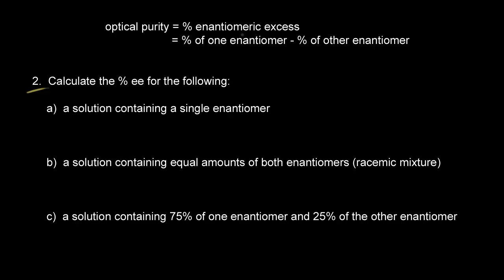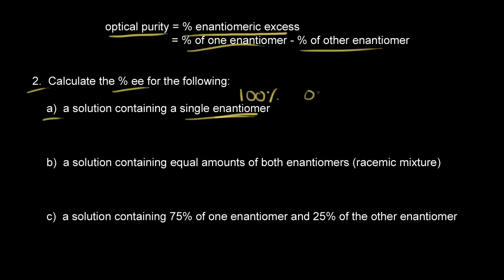For problem two, let's talk about percent enantiomeric excess, or optical purity. This is where you take the percentage of one enantiomer and subtract the percentage of the other. For part A, let's calculate the percent enantiomeric excess for a solution containing a single enantiomer. That means you have 100% of one enantiomer and 0% of the other, so the percent enantiomeric excess is 100 minus 0, or 100%. This is an optically pure solution.